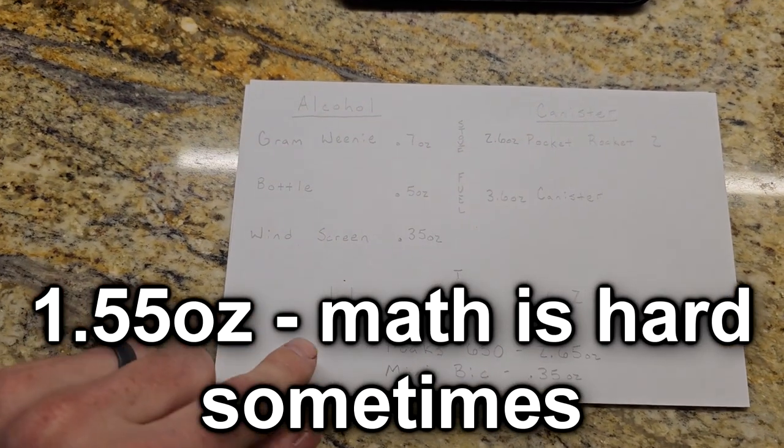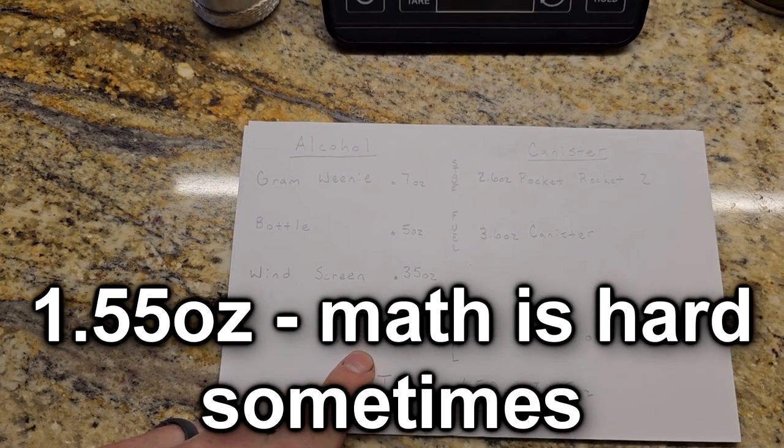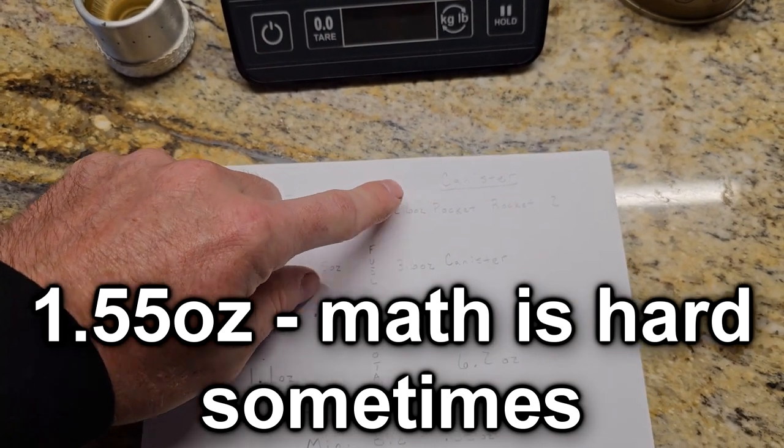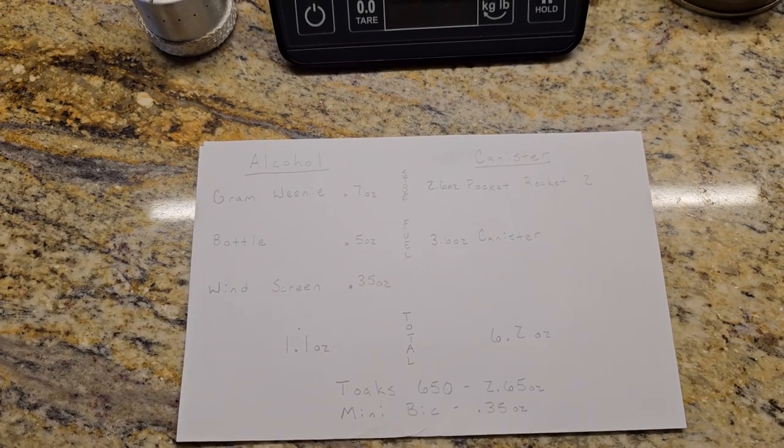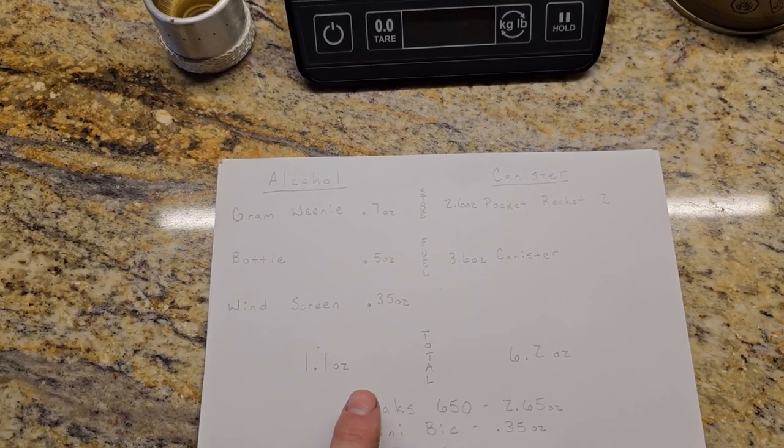So for all that together comes in at 1.1 ounces whereas my canister and the stove itself comes in at 6.2 ounces. You can tell there is a huge difference between these two here.